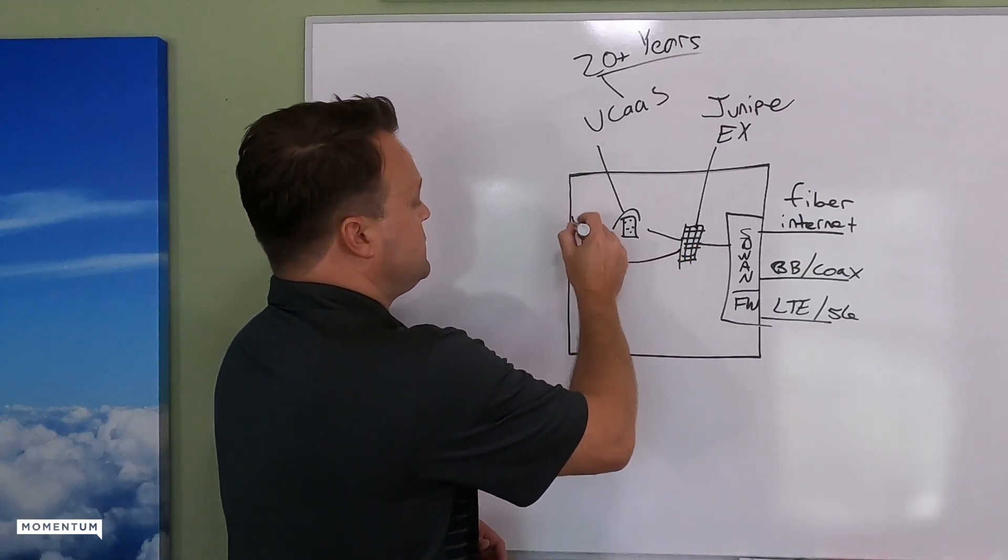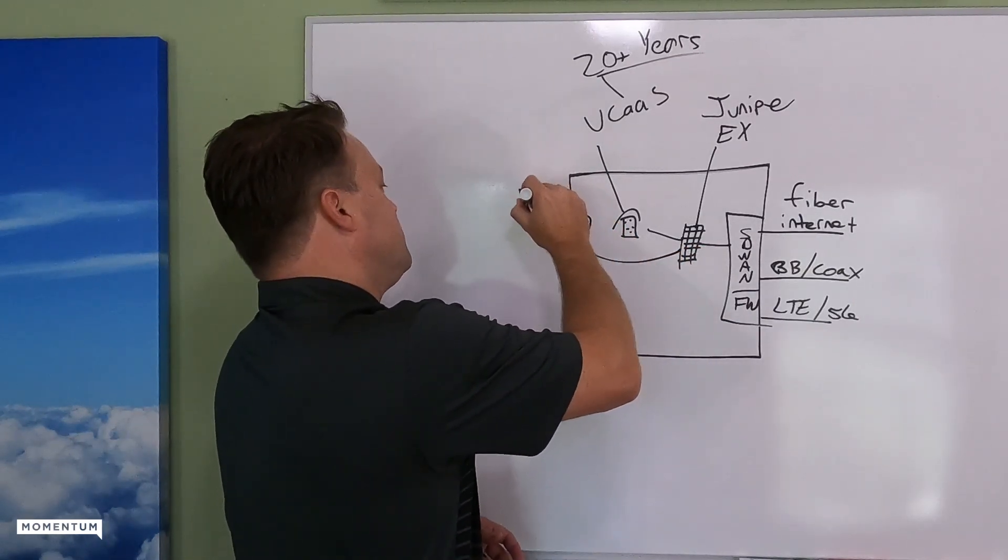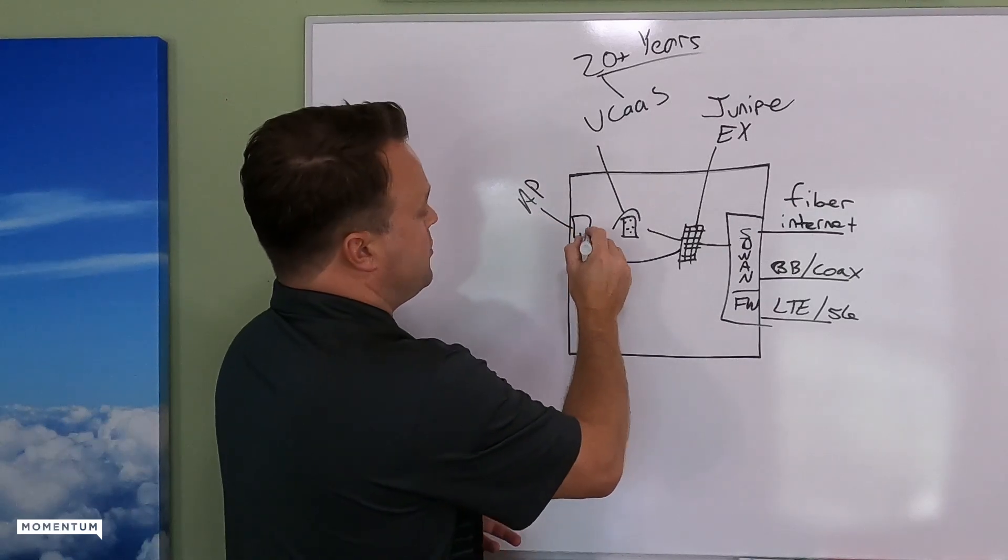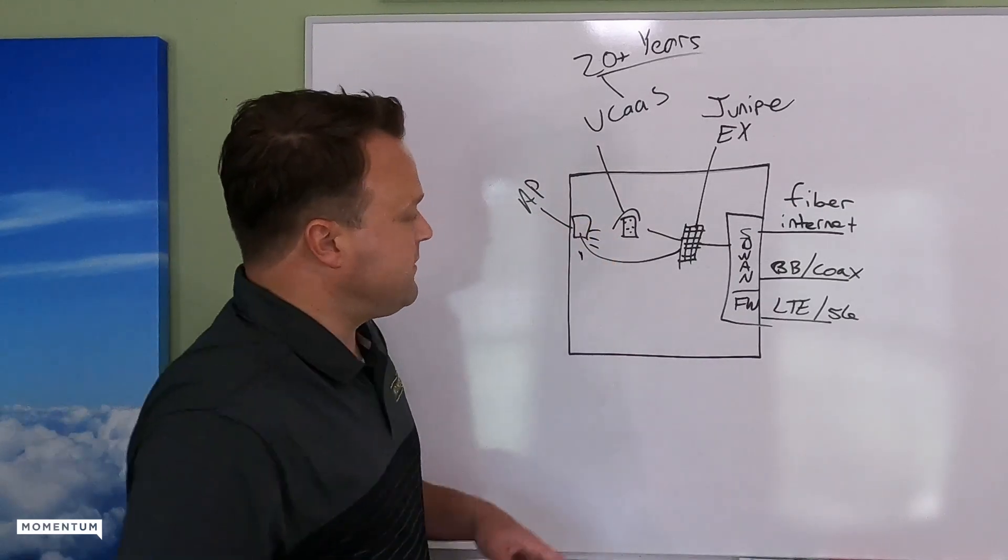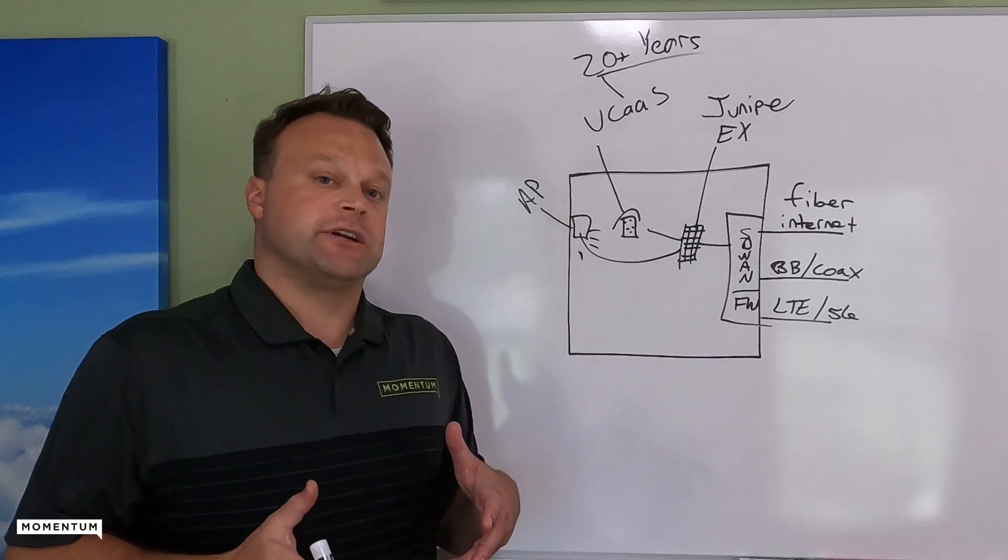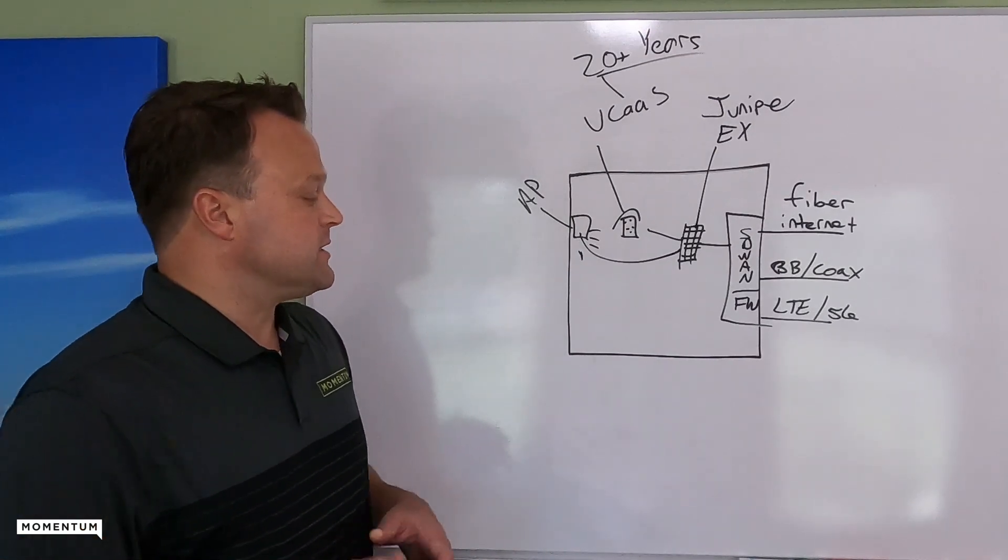And then you get over to APs. So AP, access points for Wi-Fi. We're going to be using Juniper's series of access points.